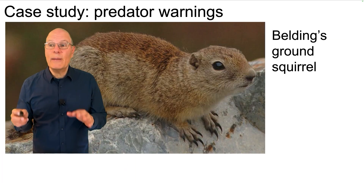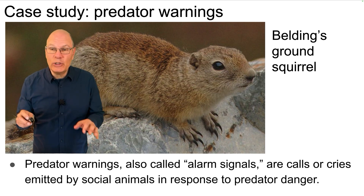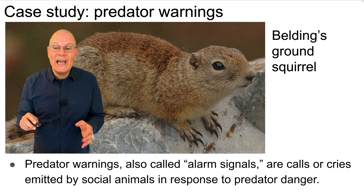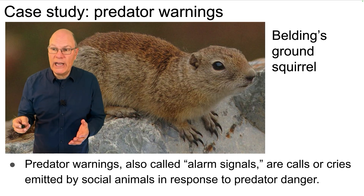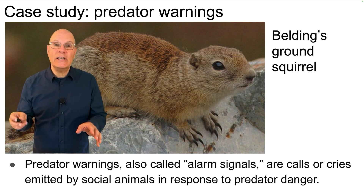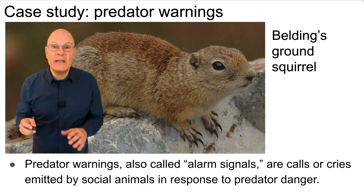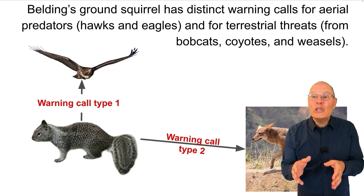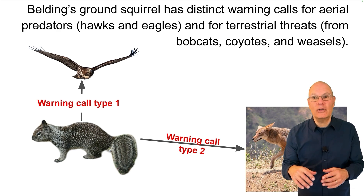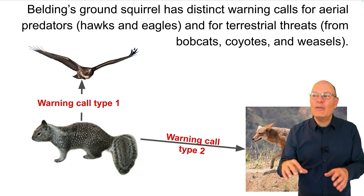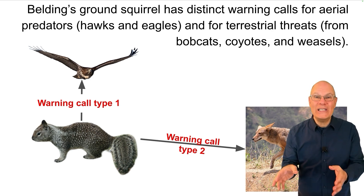We're going to start by looking at predator warnings, also called alarm signals — calls or cries emitted by social animals in response to predator danger. These have been extensively studied in the Belding's Ground Squirrel, which lives in the Sierra Nevada Mountains of California. Belding's Ground Squirrel has distinct warning calls for aerial predators like hawks and eagles, and for terrestrial threats from bobcats, coyotes, and weasels.